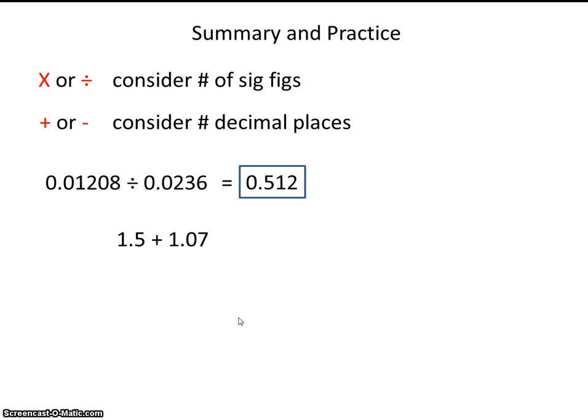Okay, pause the video now. This is the answer that I got, 2.6. So this number is precise to the tenths place. This number is precise to the hundredths place. So the fact that this number is precise to the tenths place limits us to an answer that's precise to the tenths place.